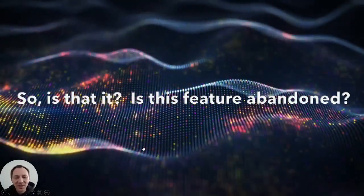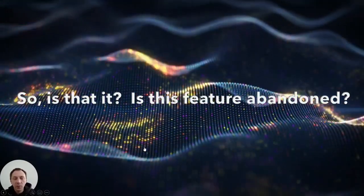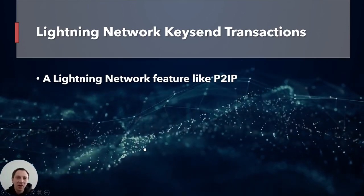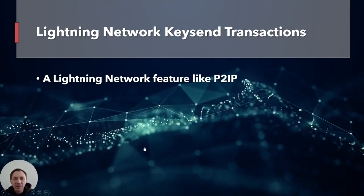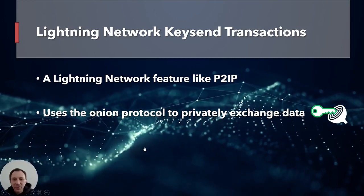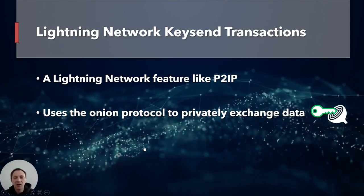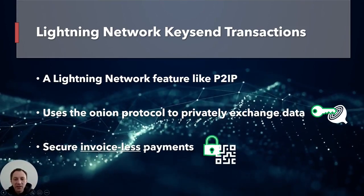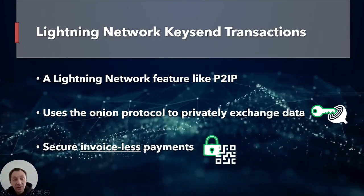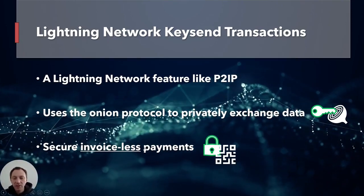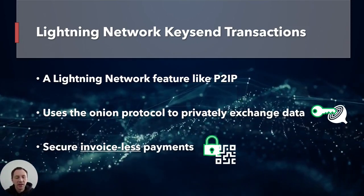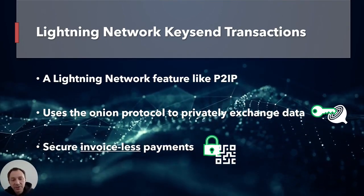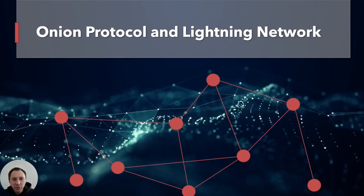So is this feature abandoned? Well, there is a feature on the Lightning Network that looks just like Pay2IP, and it's called Keysend transactions. It uses the onion protocol for networking on the Lightning Network to privately exchange data for transactions. It's a way to do secure invoice-less payments. Unlike a normal lightning payment where you receive a one-time invoice, in this case there is no invoice.